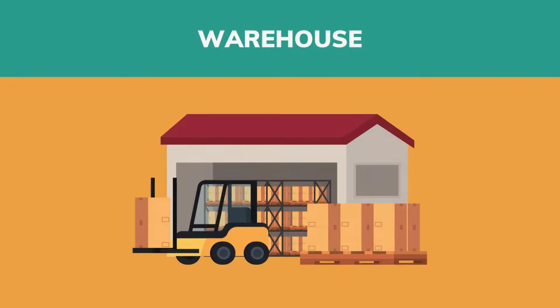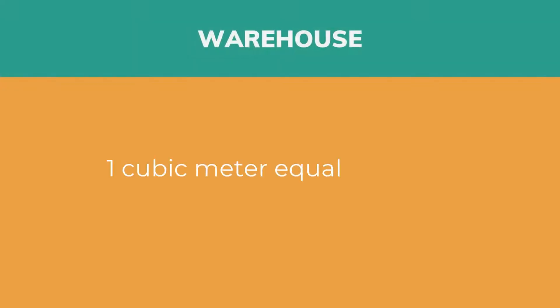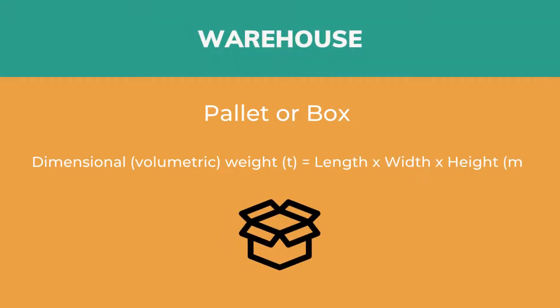First, the warehouse. When it comes to a warehouse, one cubic meter equals one ton — for the box and for the cylinder.